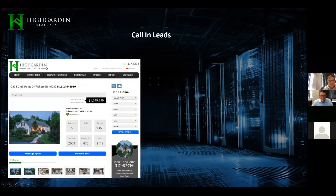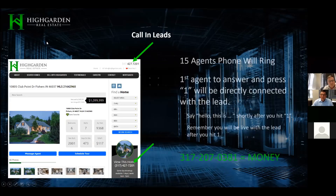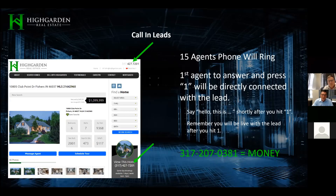For the High Garden call-in leads, if a lead is looking at a house on our website, we display phone numbers all over our site. Someone's going to be on the phone wanting to ask questions or schedule a showing. How this works: we ring 15 agents' phones at the same time. The first person who answers and presses number one will receive the lead. You need to program the number 317-207-0381 into your phone as a contact — label it 'Money Call' or 'Lead,' whatever gets you excited to answer — because that's the number it'll always be coming in from.